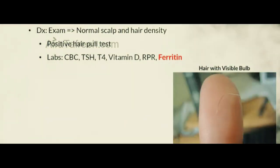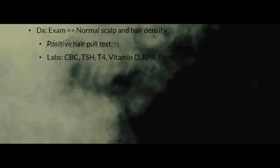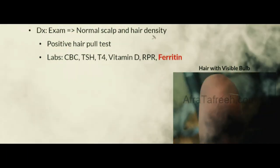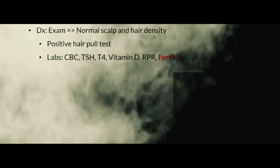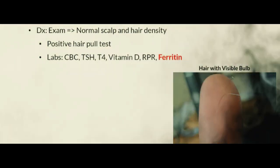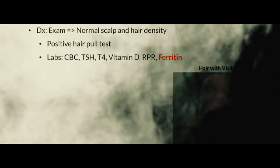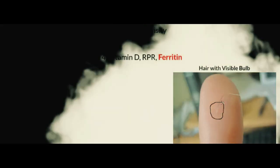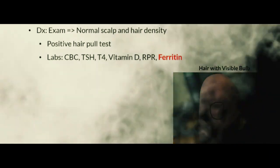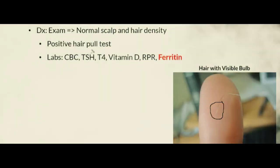On physical exam in telogen effluvium, there is going to be normal scalp and hair density, because hairs during the telogen phase are being shed directly from their root. When you examine the shed hairs, you will be able to appreciate a visible bulb, signifying that the telogen hair was shed directly from its root. Because there is active hair shedding during telogen effluvium, these patients will have a positive hair pull test — this is extremely high yield.